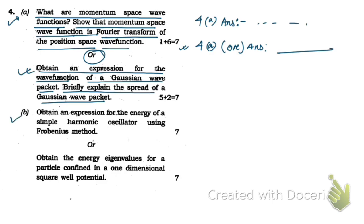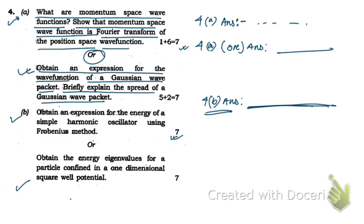For question 4b — obtaining an expression for the energy of a simple harmonic oscillator using the factorization method — I've already made a video on this topic as well. Just check question number 4b answer in the description box and click the link provided.